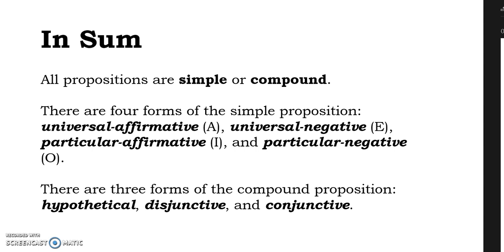To wrap it up: all propositions are simple or compound. There are four forms of the simple — A: universal affirmative; E: universal negative; I: particular affirmative; and O: particular negative. And there are three forms of the compound: the hypothetical, the disjunctive, and the conjunctive. Be ready for the Three Arts quiz to perform the kind of exercise we just did.